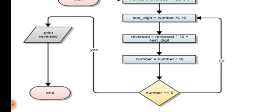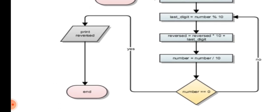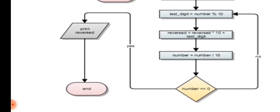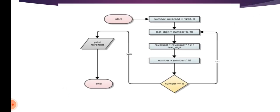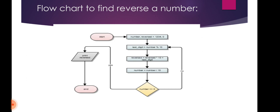If the number is not equal to 0, the loop continues. If the number equals 0, print the reverse. The decision statement in the flowchart is shown in a diamond shape. If the given number equals 0, it prints the reverse of the given number and the End oval is printed. This completes the flowchart to find the reverse of a number.